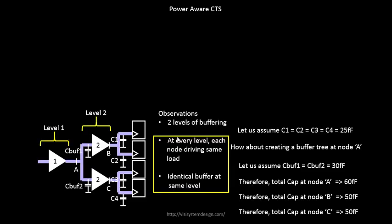Let's take an example to answer why we need SPICE. Here we have a buffer of type 1 and a buffer of type 2. This is a snippet from my previous course on clock tree synthesis. There are some specifications: the output load at one node is 60 femtofarads, at another point it's 50 femtofarads, and at another it's 50 femtofarads. These values come after some calculations which I've explained in my clock tree synthesis course.